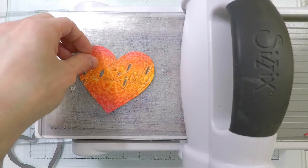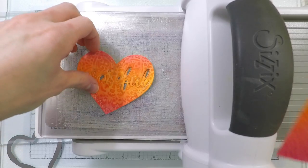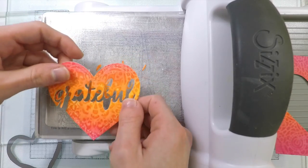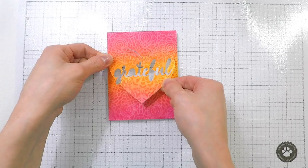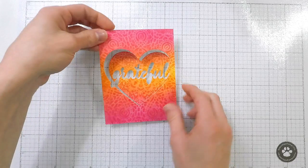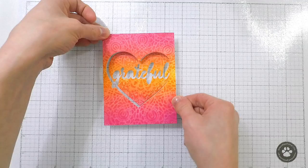I'm going to keep both that panel that has the heart cut out of it. I'm also going to keep the heart itself and I'm going to keep all of the little negative pieces that go in between the word grateful, not keeping the actual grateful word itself.